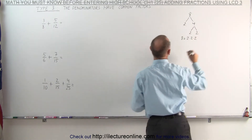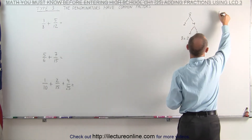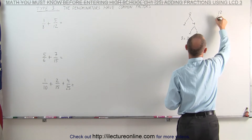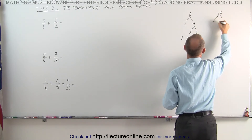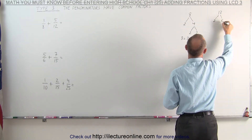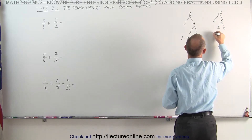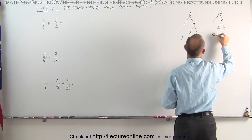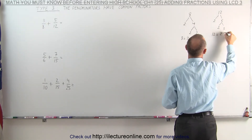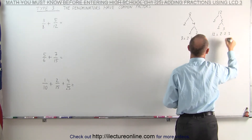Taking the number 12: 12 can be divided by 2, that gives us 6. 6 can be divided by 2, that gives us 3, which means that 12 can be written as 2 times 2 times 3.